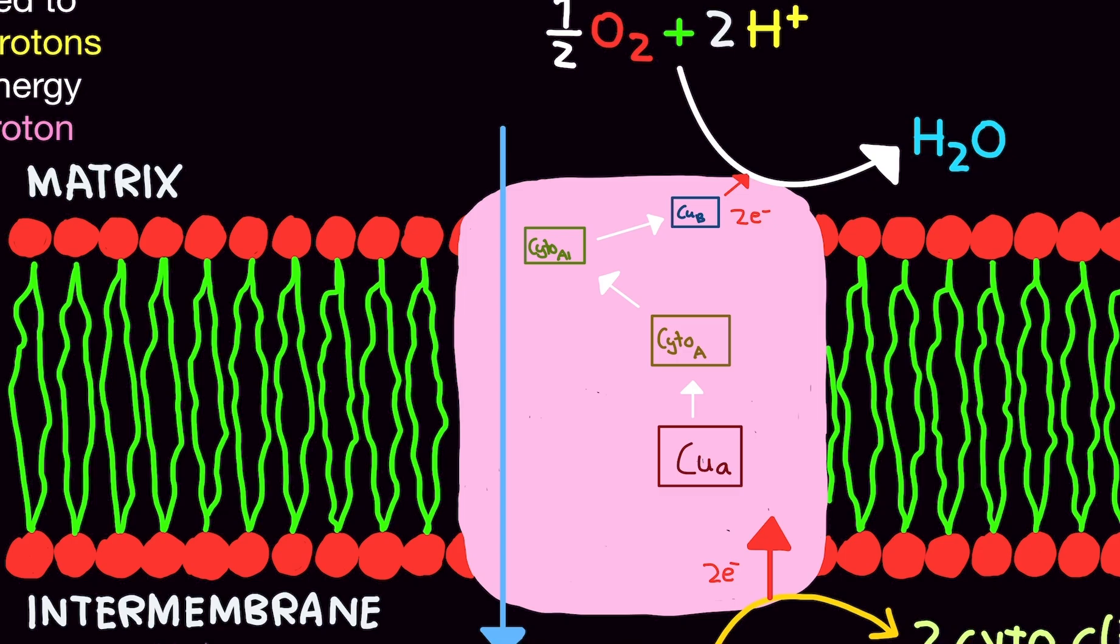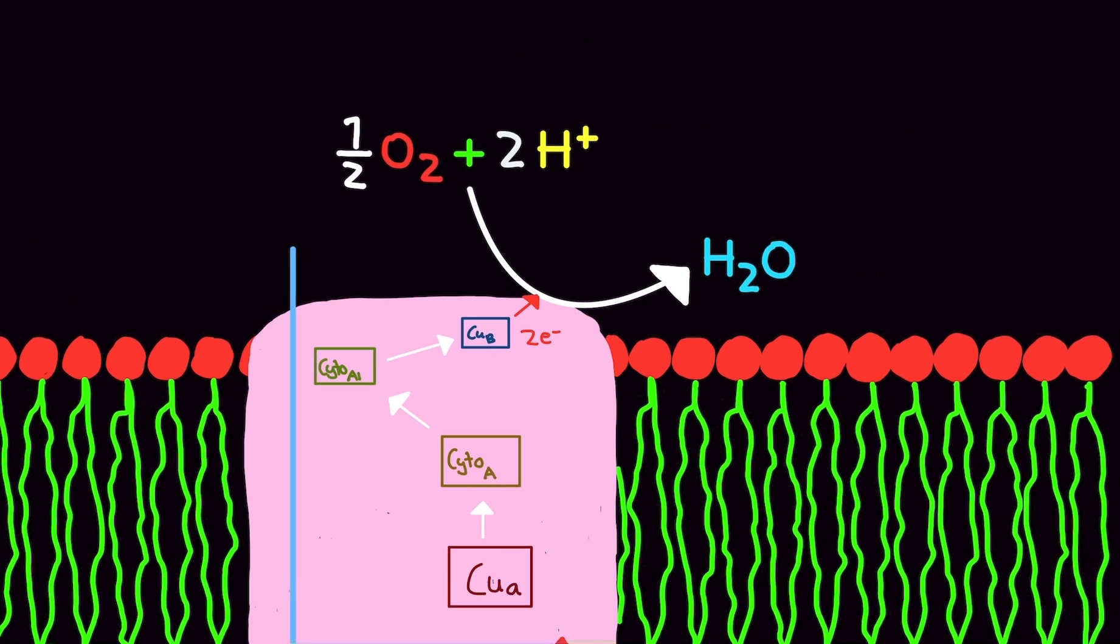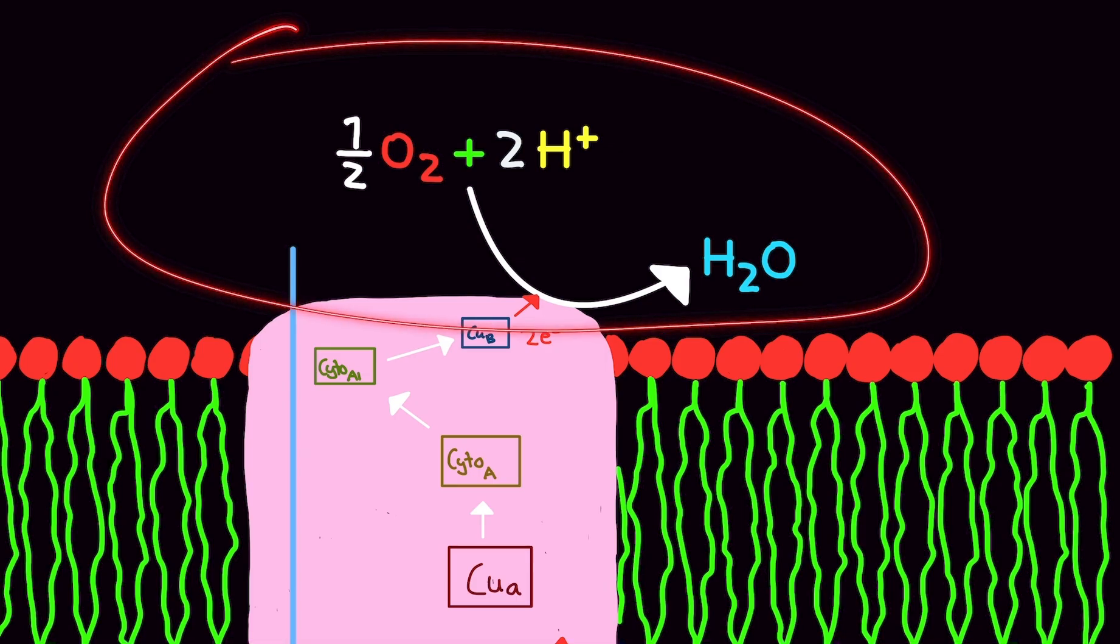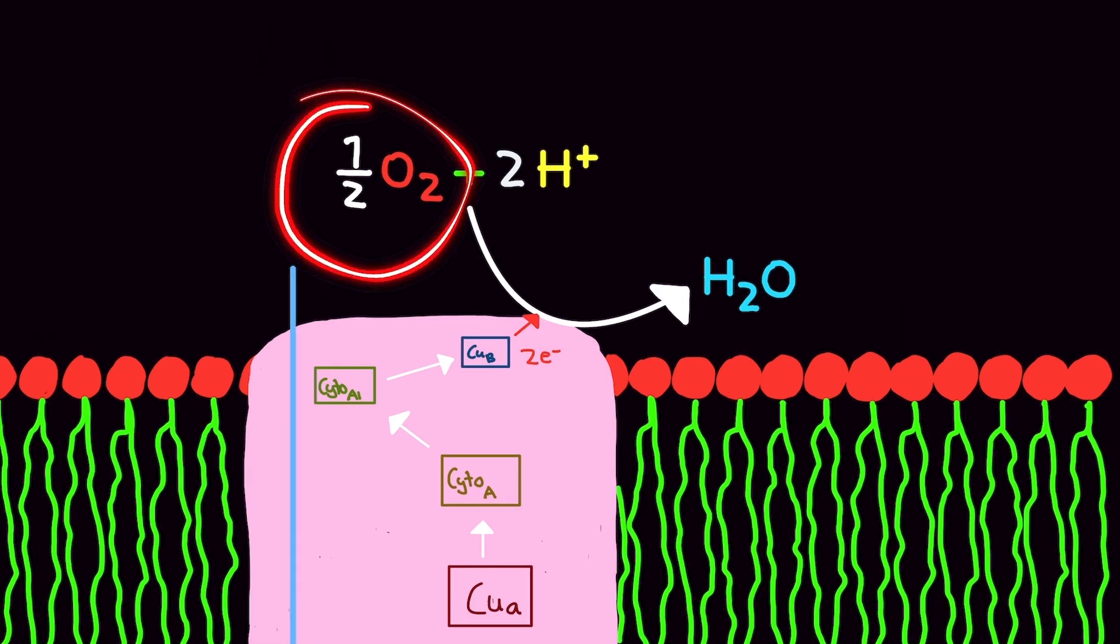Now here's what's going to happen. From the matrix side, so this is the matrix, we're going to have one-half O2 plus two protons. We'll make water with two electrons. So you're probably wondering, what is one-half O2? If you have two molecules of oxygen and we take half of that, isn't that just one molecule of oxygen? Isn't that just one atom? You're correct. That is.